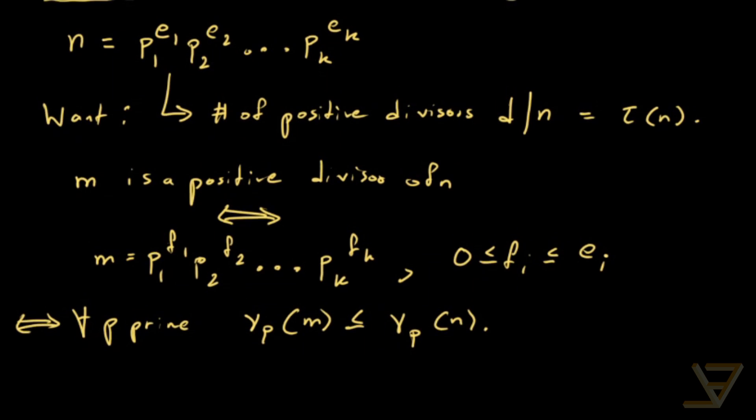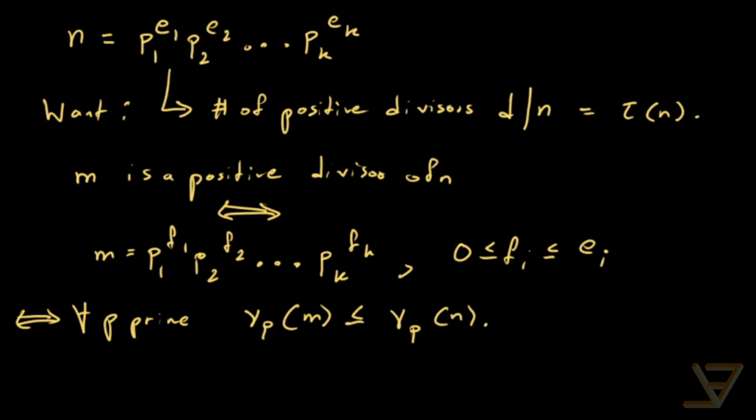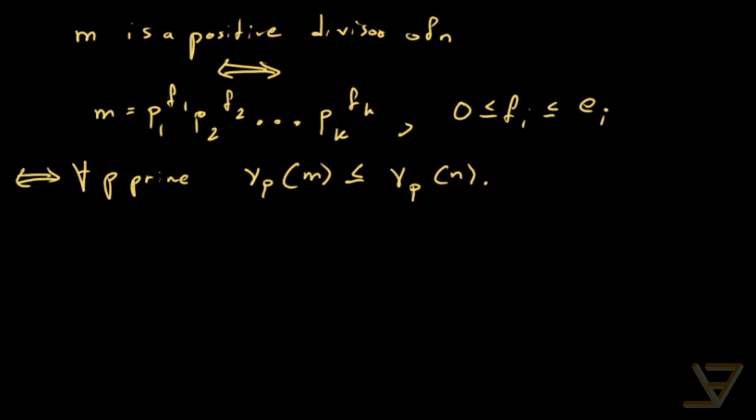Okay, so we're going to use this. And the result that we get is that essentially, these prime factors are all independent of each other. So at first sight it might seem that it should be e1 times e2 all the way through to ek, but this is actually wrong.